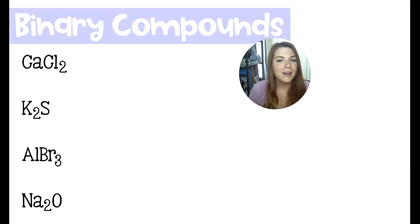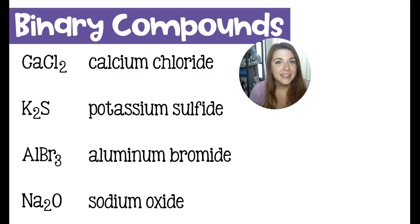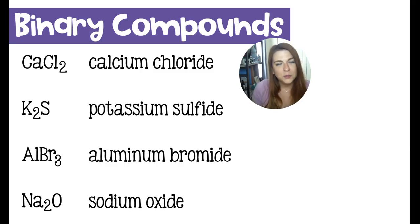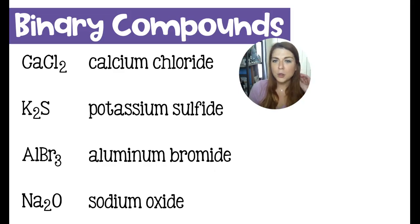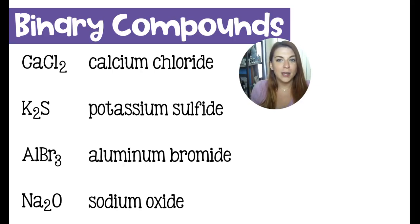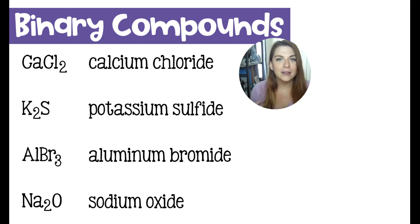CaCl2 is calcium chloride — calcium keeps its name, and chlorine changes to chloride to indicate it's now bonded. K2S is potassium sulfide. AlBr3 is aluminum bromide. And Na2O is sodium oxide. When you chop off the element's ending and add -ide, there's no strict formula for that. You just get used to it over time — it's sulfide, bromide, oxide. It comes with time.